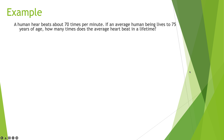Next: a human heart beats about 70 times per minute. If an average human lives to 75 years of age, how many times does the average heart beat in a lifetime? This is a chain cancellation problem. Let's underline the important stuff: 70 beats per minute, 75 years old. You'd need to find minutes in a day, days in a year, and years at 75.